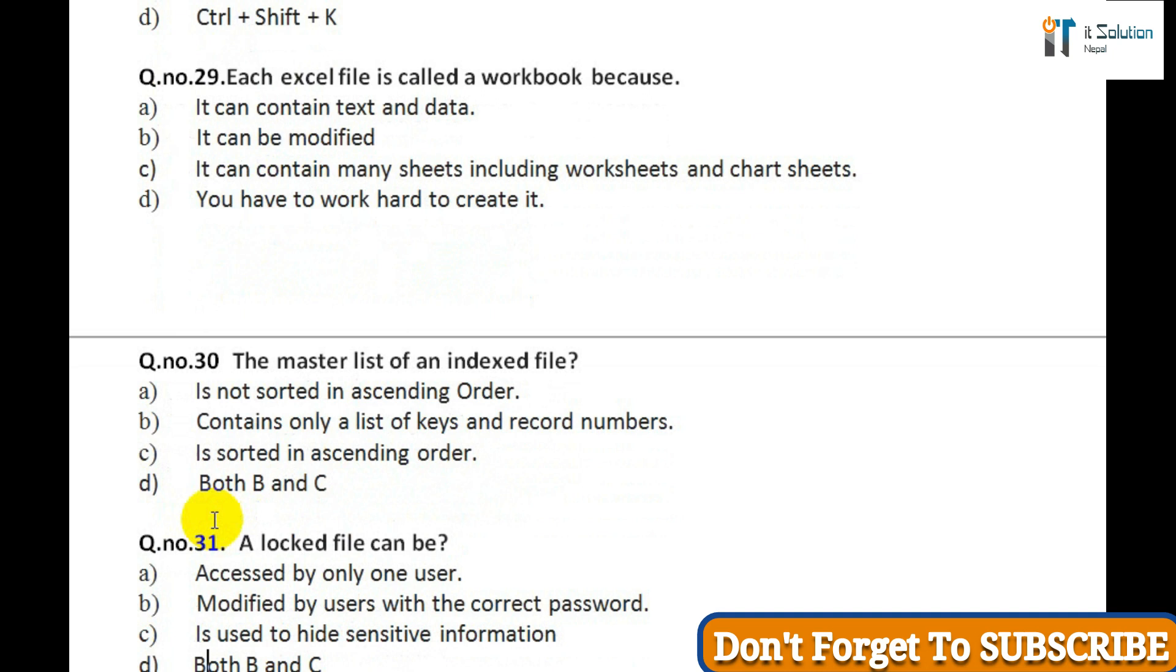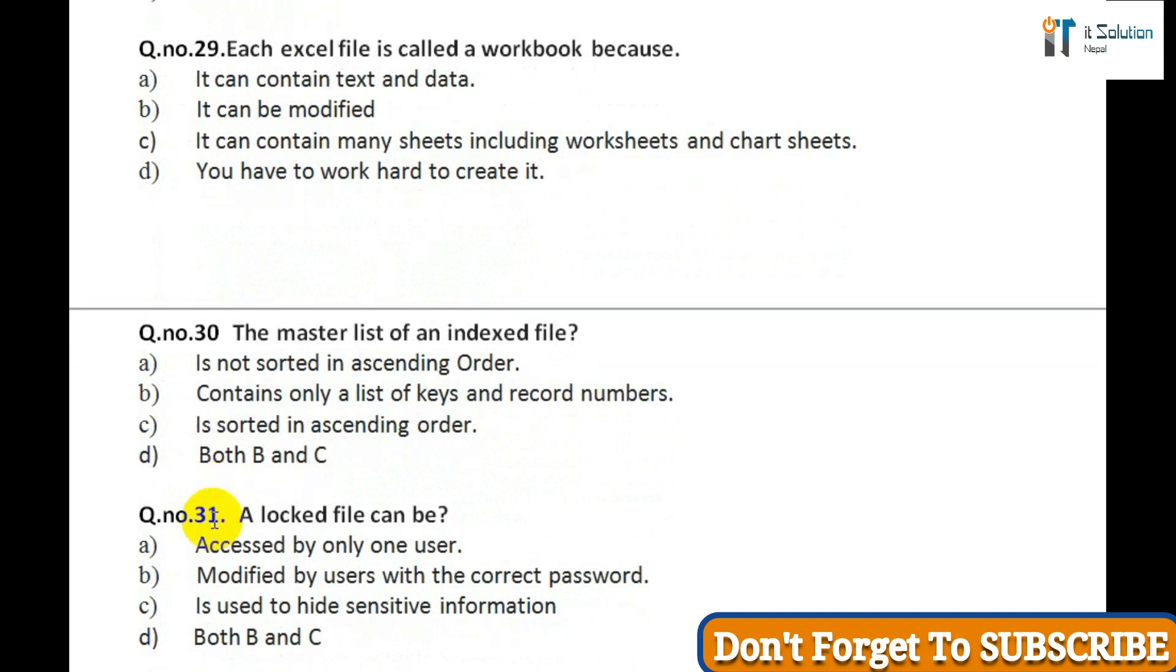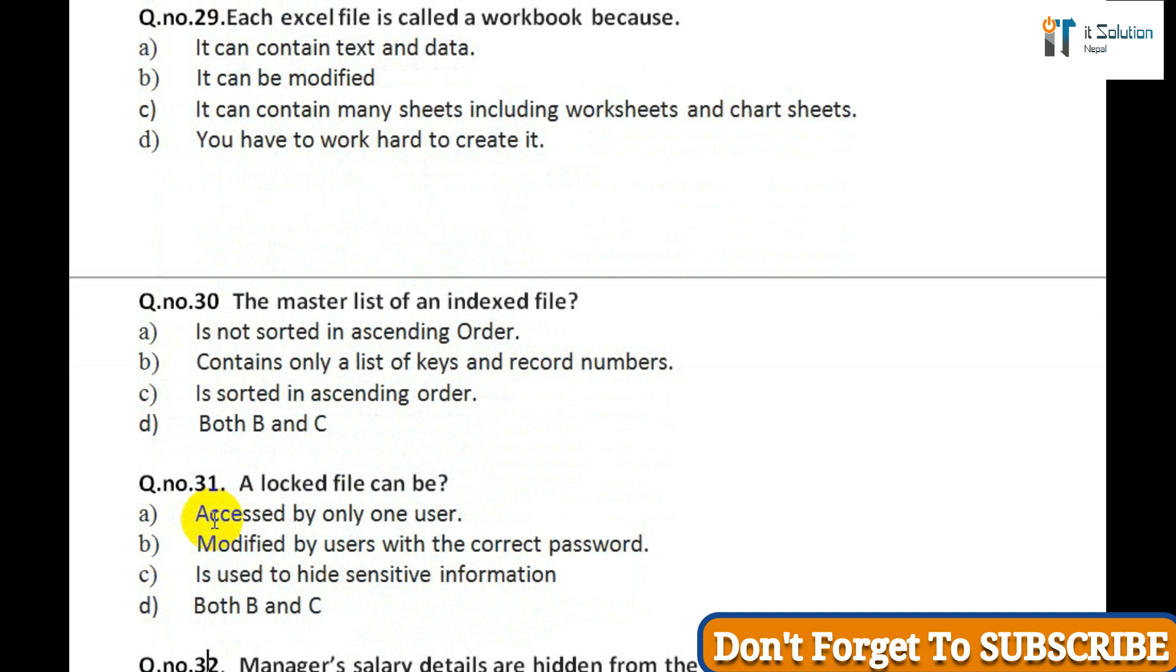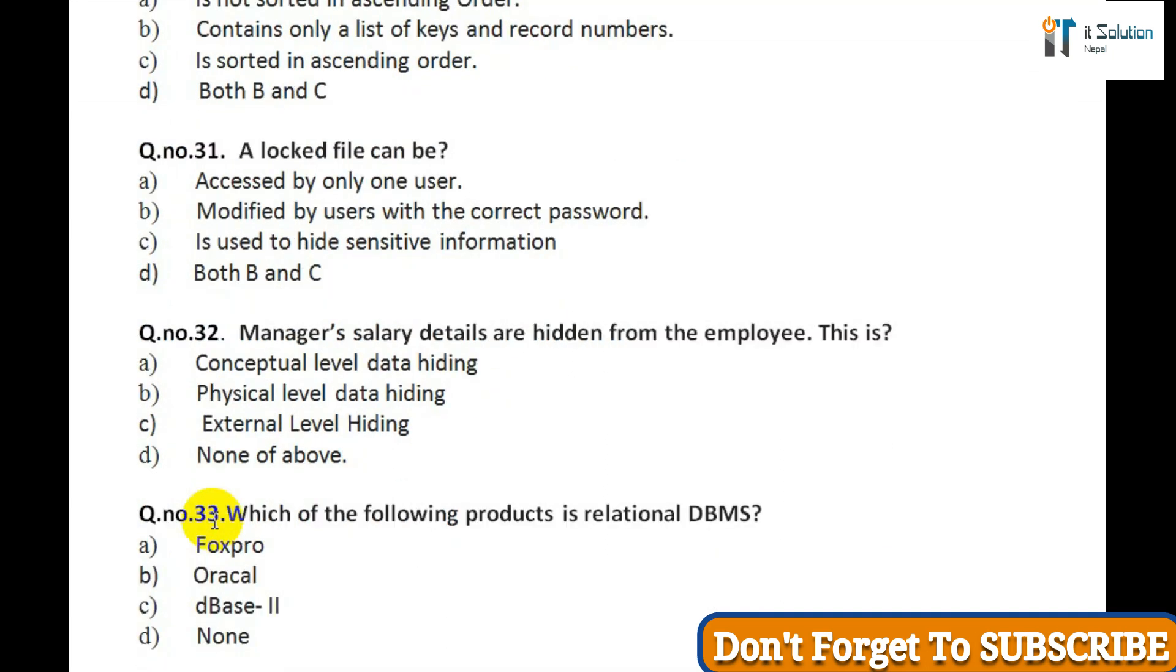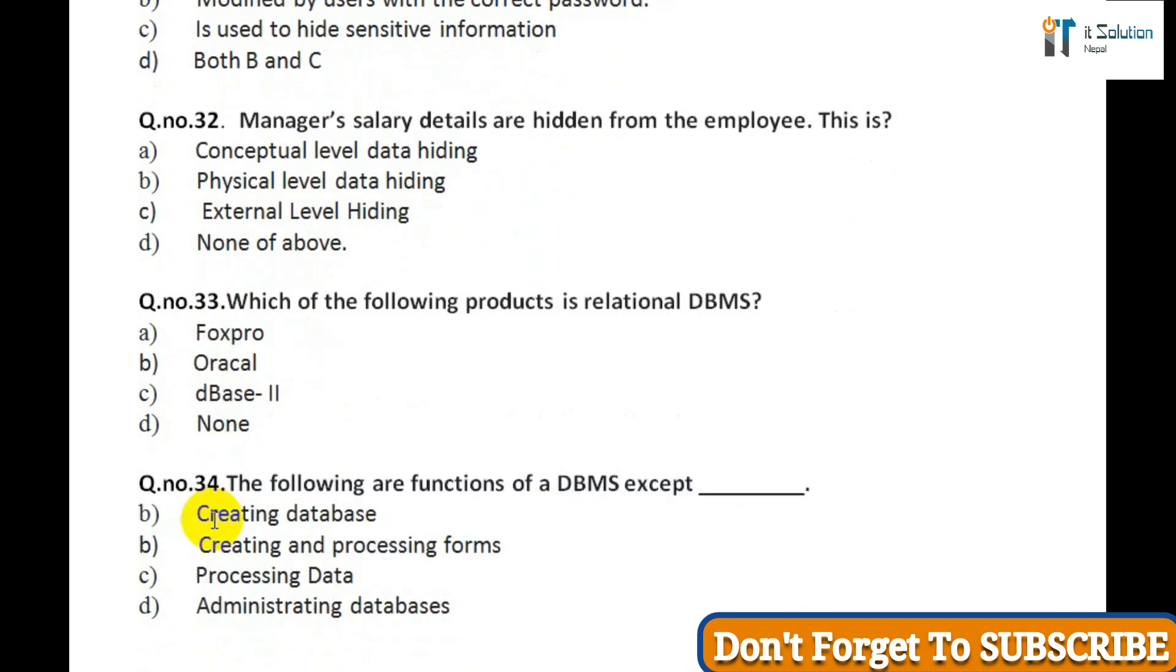Question twenty-six: When the formula bar is activated you can see: A) The edit formula button, B) The cancel button, C) The enter button, D) All of above. Question twenty-seven: You can activate a cell by: A) Pressing the Tab key, B) Clicking the cell, C) Pressing an arrow key, D) All of above. Question twenty-eight: You can add a hyperlink to your worksheet by pressing: A) Alt+K, B) Ctrl+A, C) Ctrl+K, D) Ctrl+Shift+K.